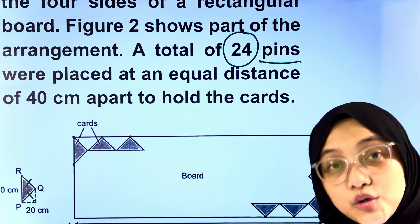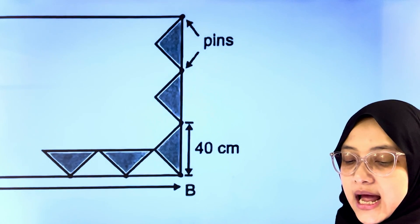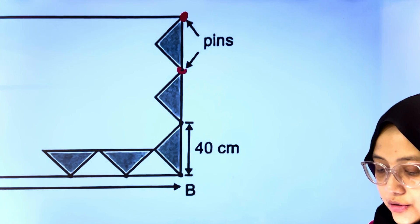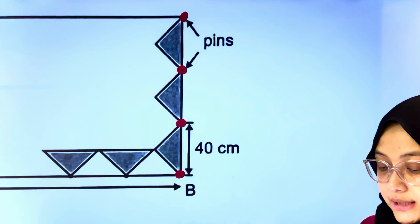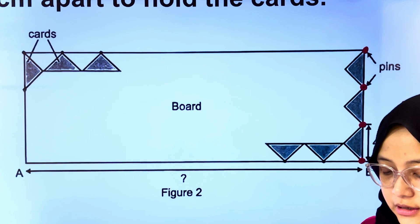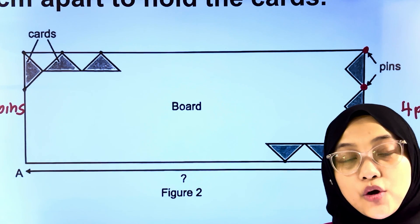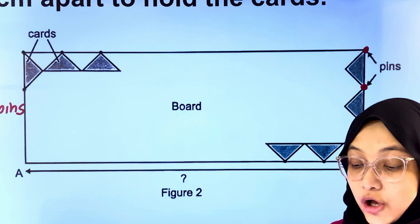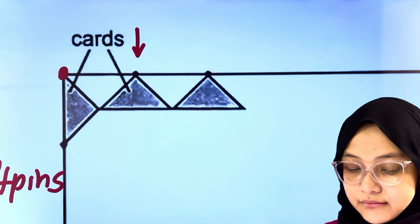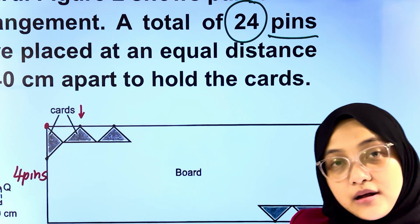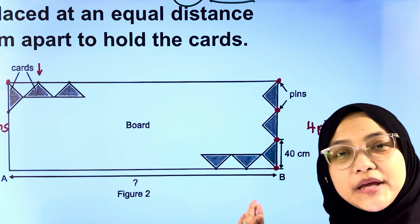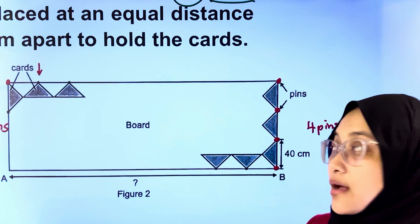We know that there are 24 pins that were being used for this arrangement. Let's calculate how many pins were being used along the breadth. One, two, three, four. Write down at the side, four pins. Do the same to the other side of the breadth. Hence, we need to know how many pins are being used along the length. Take note, we don't include this pin anymore, so we'll start counting from here. If four pins were being used on the left side of the board and another four pins being used on the right side of the board, in total, eight pins were being used along the breadth.